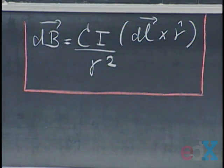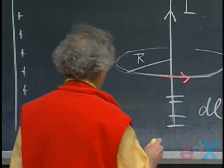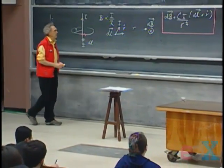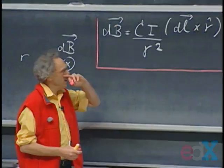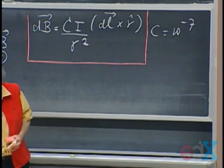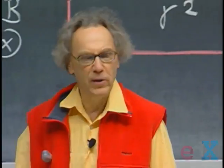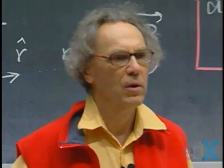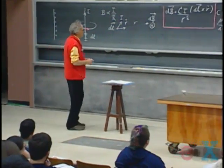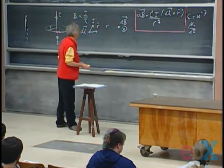You can do experiments and measure the magnetic field in the vicinity of wires, and this formalism works. You calculate the individual contributions of all these little elements DL and then do an integration. You can also measure what the constant C is. In SI units, C is ten to the minus seven. We write C as mu_0 divided by four pi, and we call mu_0 the permeability of free space — analogous to how in Coulomb's law the constant nine times ten to the ninth is written as one over four pi epsilon_0.